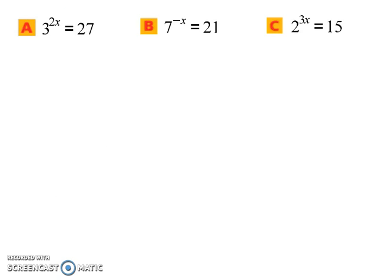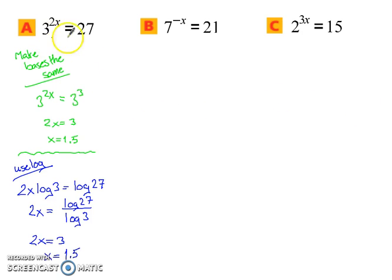Try these next three on your own. So notice how with the first one I gave you, you can use either method. Either make the bases the same or you can use logs. So if we made the bases the same, we would use 3 because 3 to the third power is 27. So 2x equals 3, leaving x to equal 1.5.